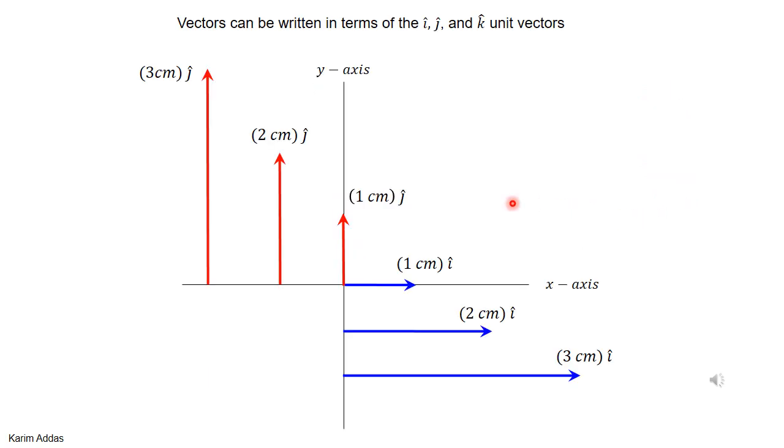You can form vectors in terms of the unit vectors that have dimensions and units, particular units. You can make a vector one centimeter in the j hat direction, one centimeter in the i hat direction, two centimeters in the i hat direction, and so on.